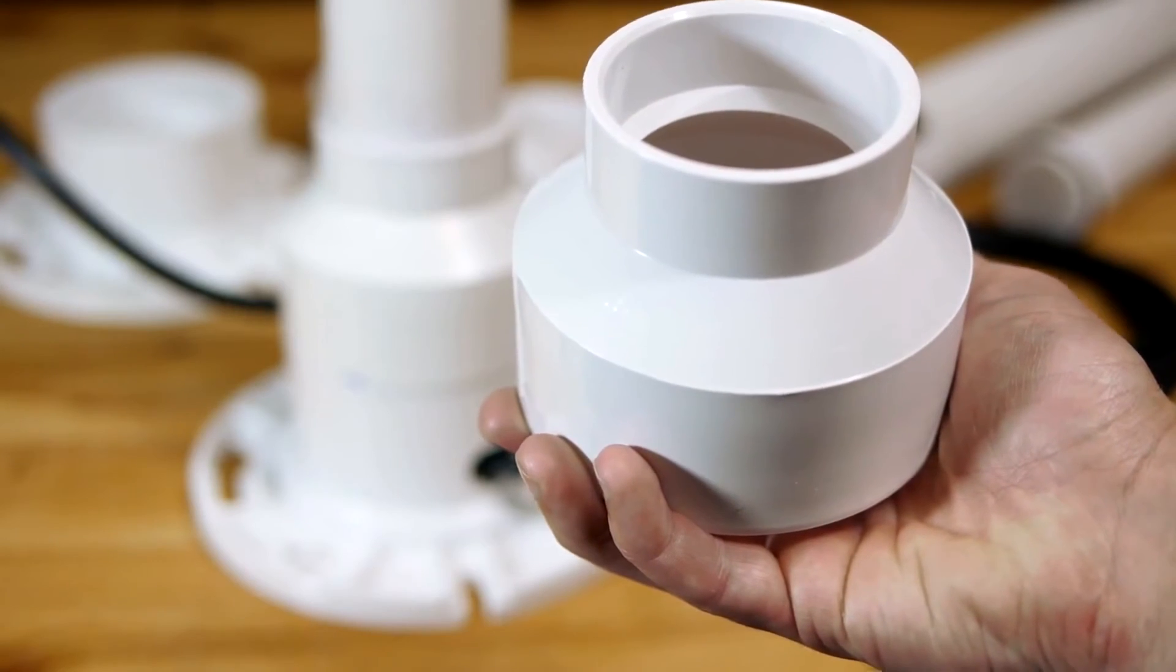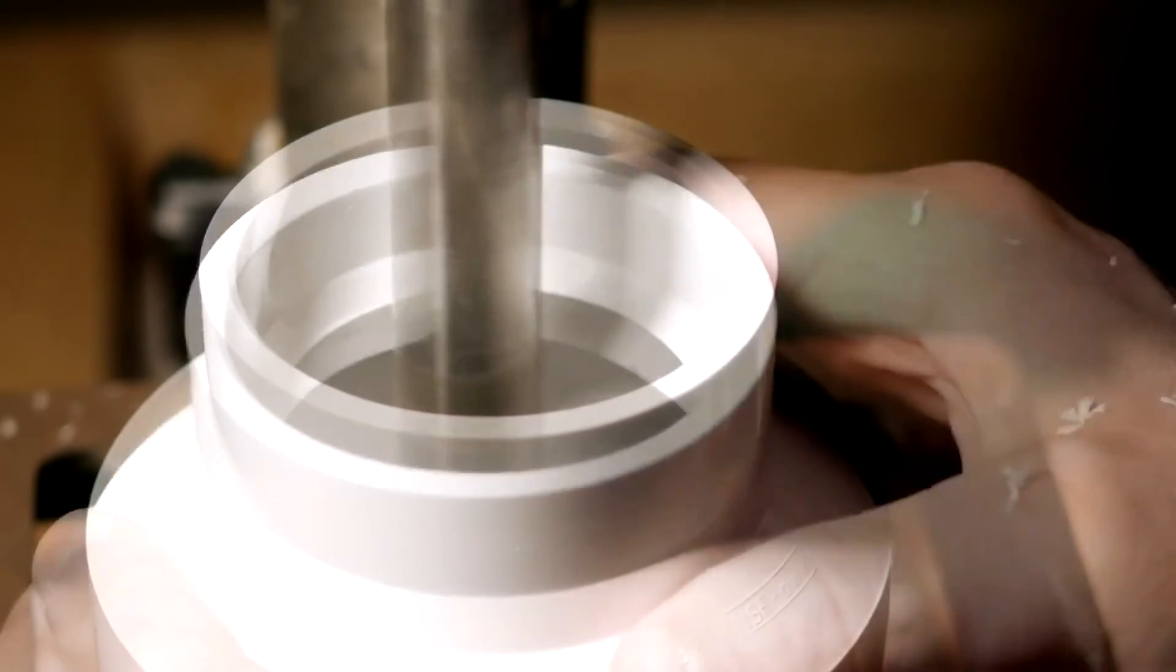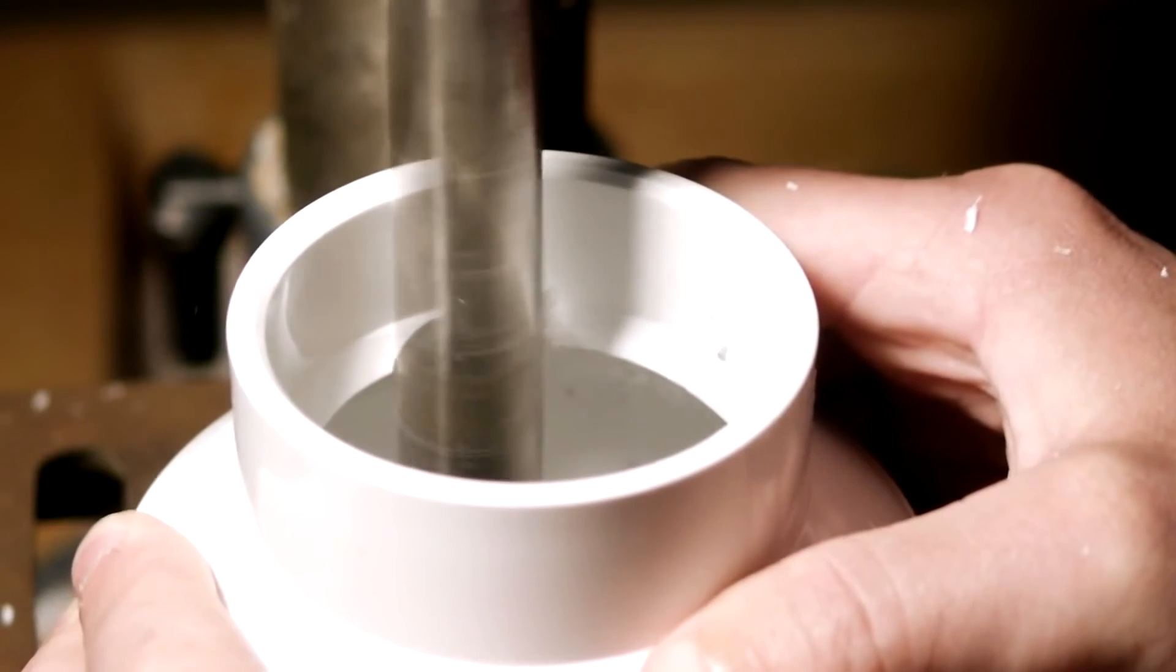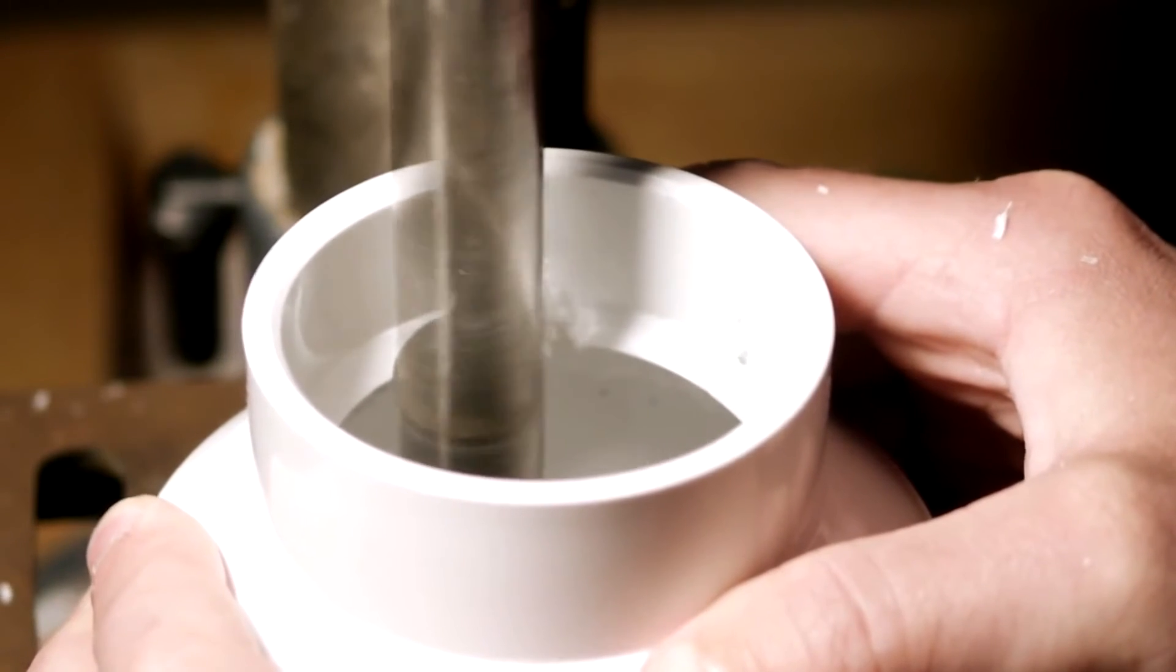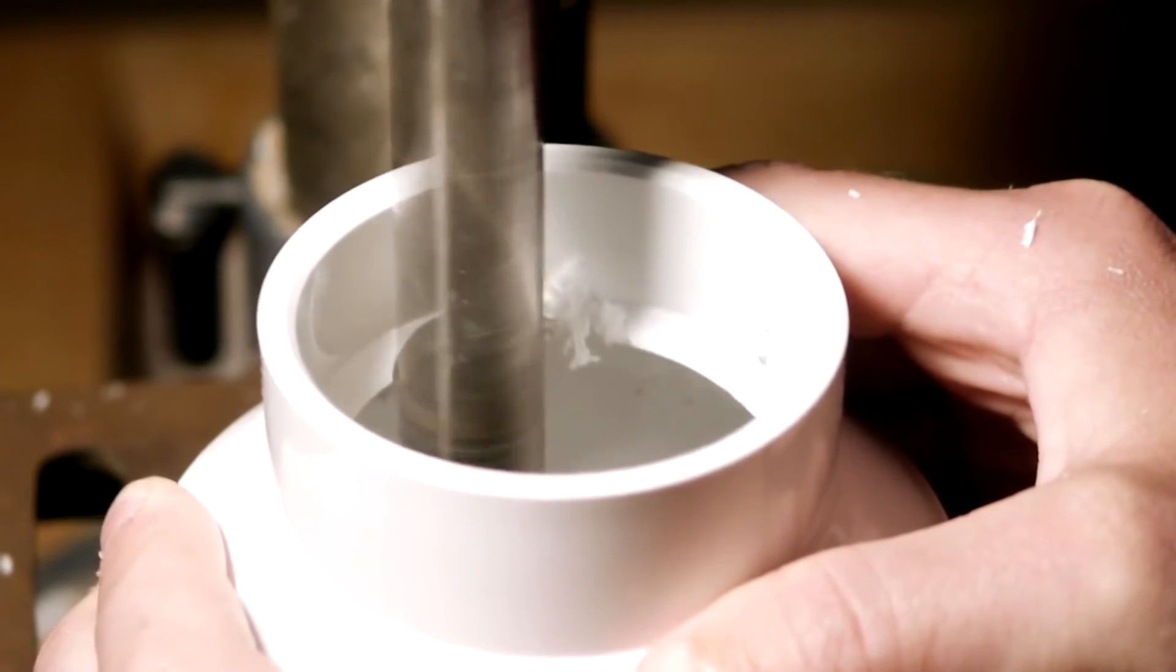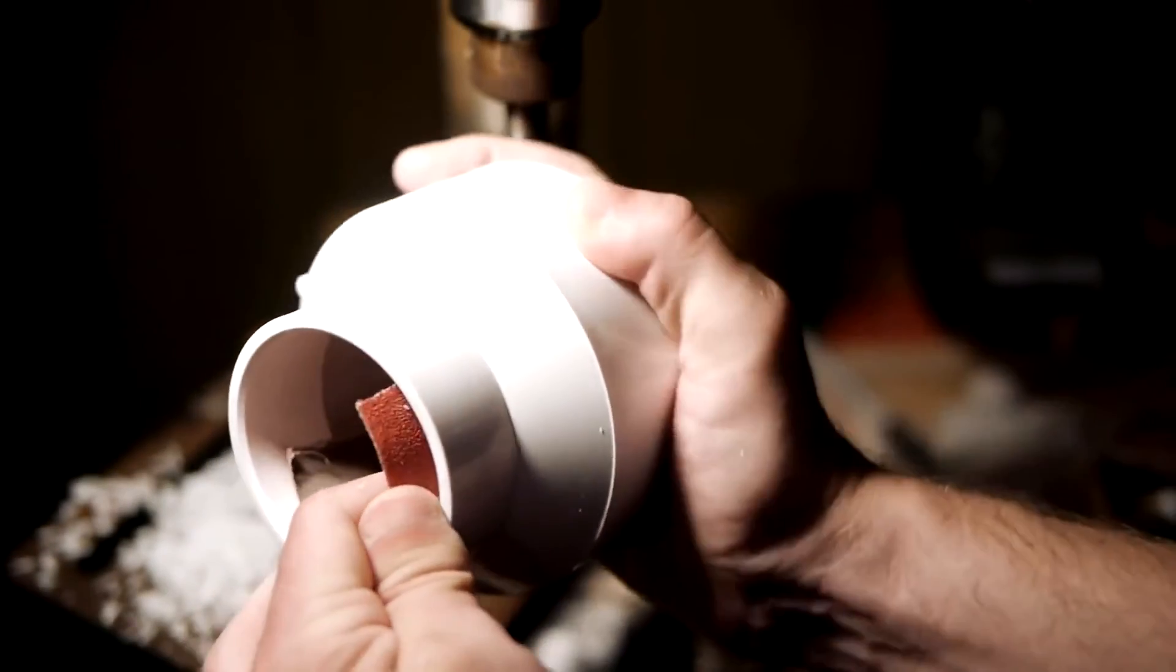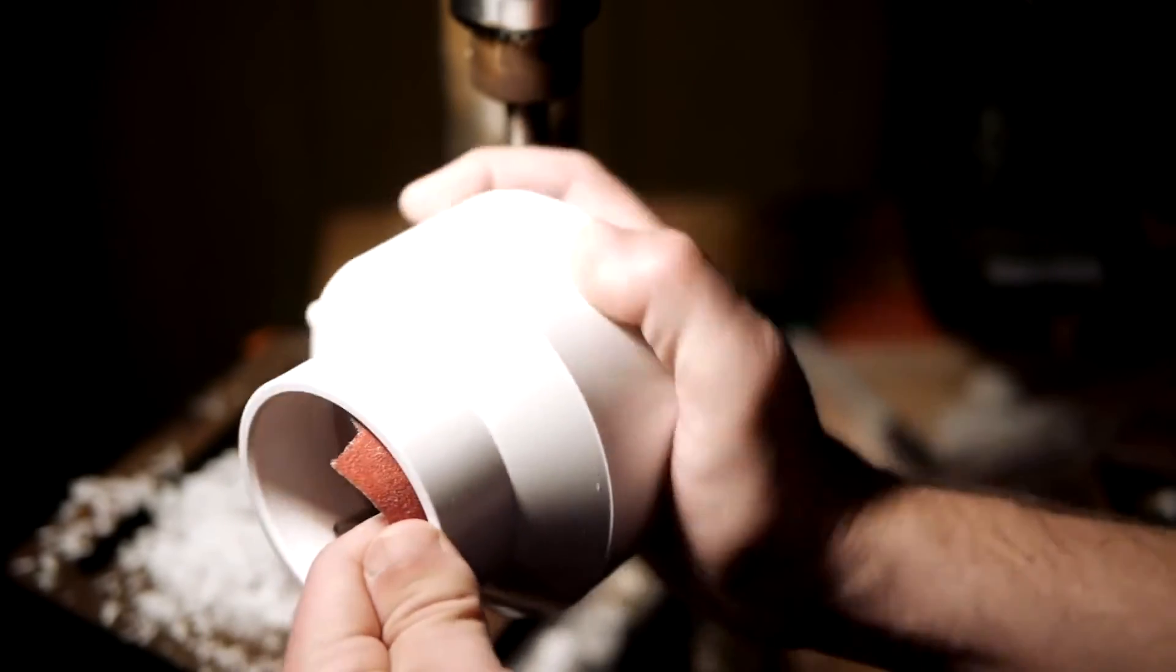A large drill bit works nicely to quickly remove the problem as can be seen here, but a razor blade or a dremel will work as well. Some sandpaper smooths out any rough edges and this part is complete.